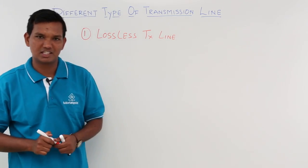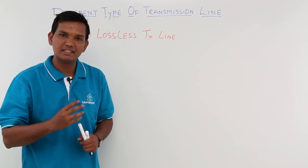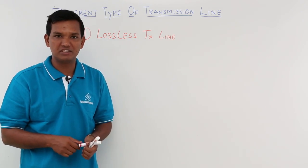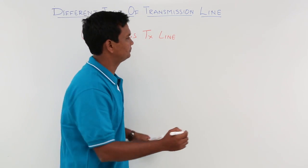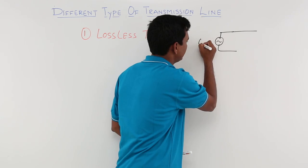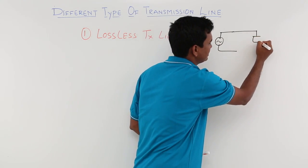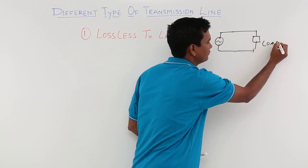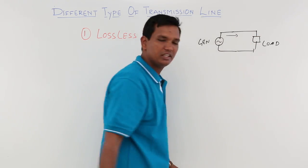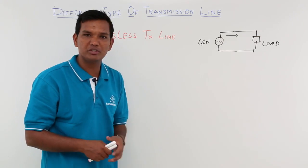What do we mean by a lossless transmission line? When any wave or voltage is traveling over any line, the loss should be zero. Let's say we have a generator or source on one end and a load on the other. Whatever voltage is traveling should not drop — the loss should be zero.